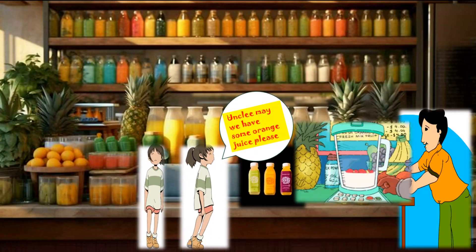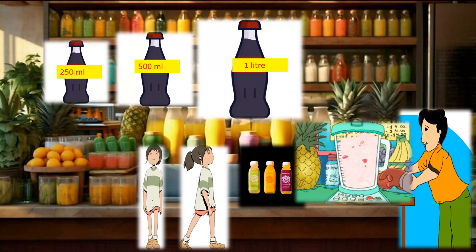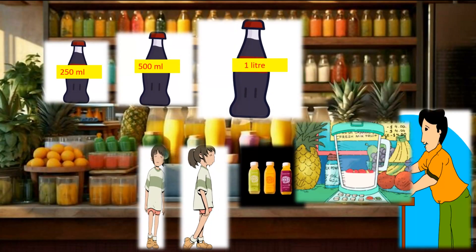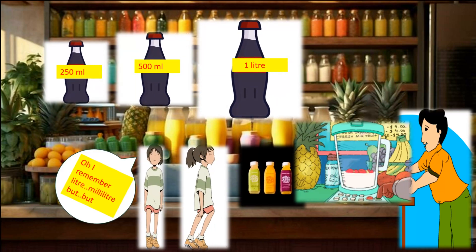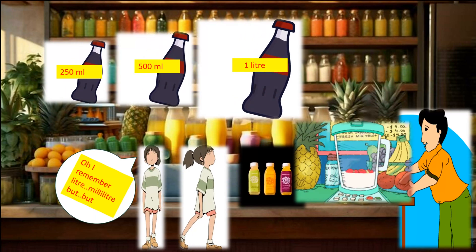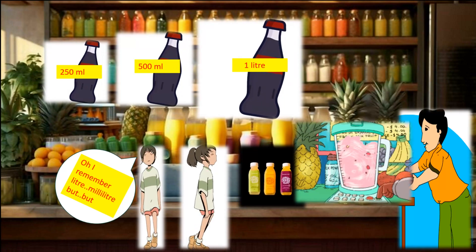Uncle, may we have some orange juice please? Sure. Which one would you like? 300 ml, 500 ml or 1 litre? I remember, ml is milliliter and l is litre. But, well then, let us revise a little.